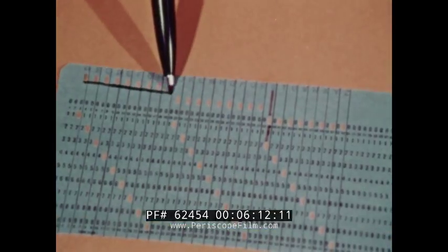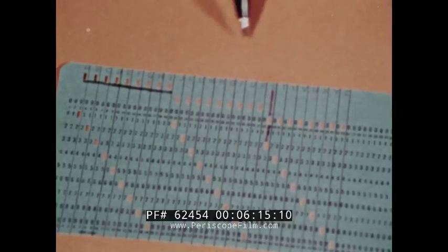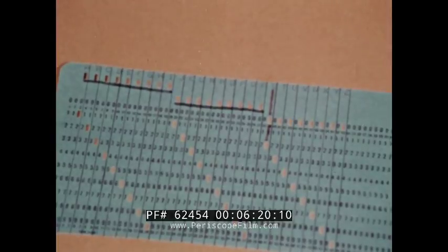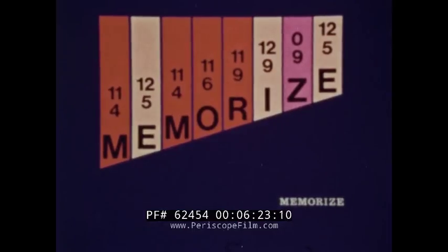Zoning is a simple organization, but to make it efficient, you must be able to quickly recognize the numerical values of each letter. The best way to learn this is to memorize: 11-4, 12-5, 11-4, 11-6, 11-9, 12-9, 0-9, 12-5. The main divisions being A, J, and S. It's the same old alphabet with numerical values.